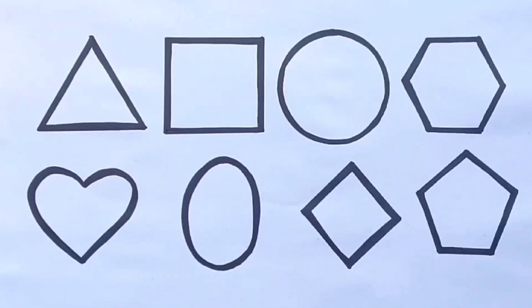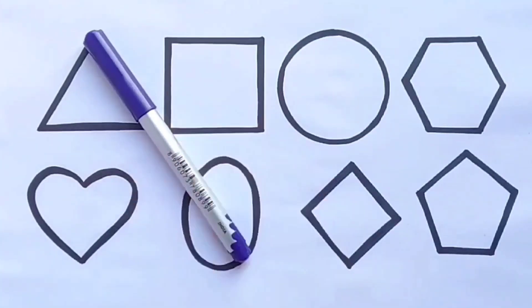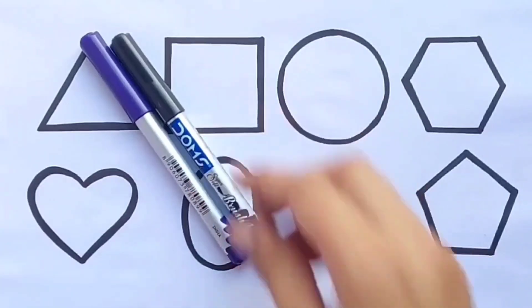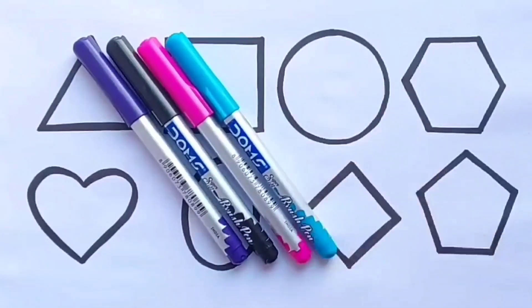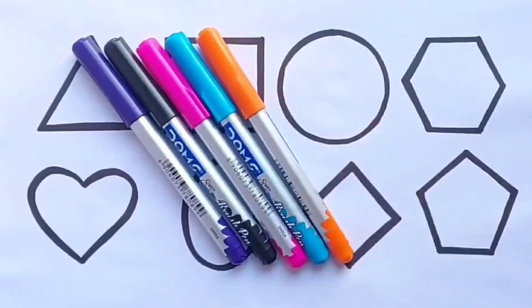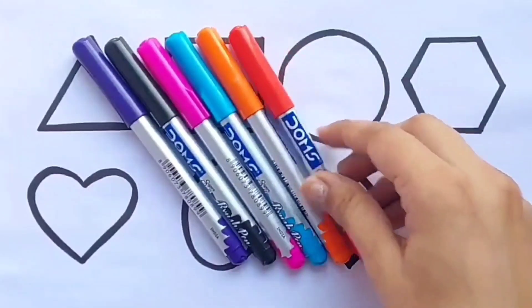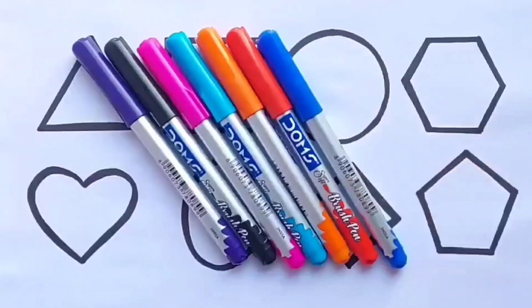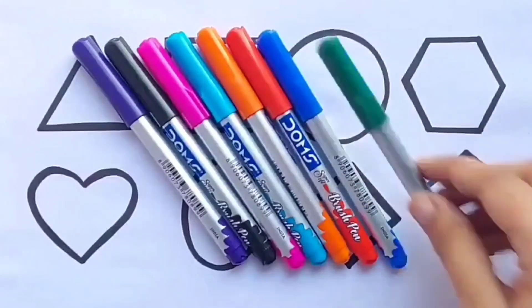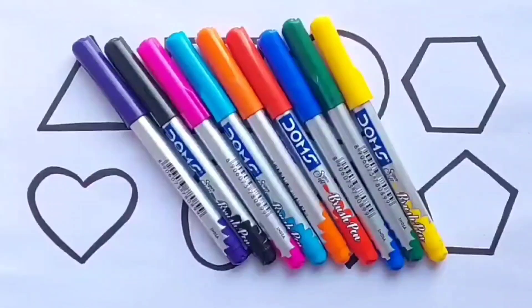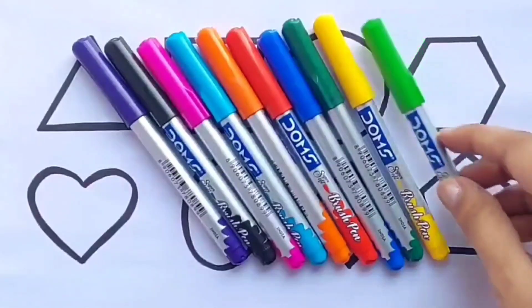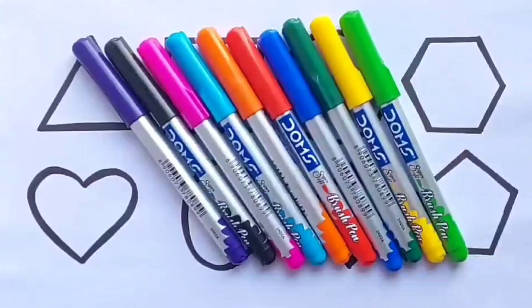Let's learn colors name. Purple color. Black color. Pink color. Sky blue color. Orange color. Red color. Blue color. Green color. Yellow color. Light green color.